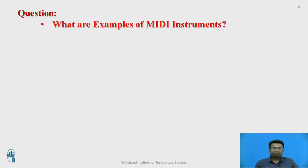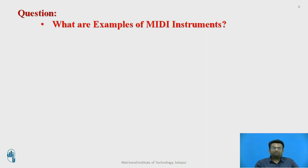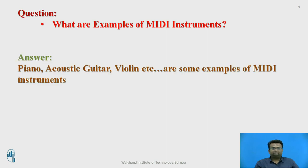Let me ask you one question: what are the examples of MIDI instruments? You can pause this video, think about this question, and write down your answer in the notebook. After writing the answer, you can resume the video to see the answer. The answer is: piano, acoustic guitar, and violin are some examples of MIDI instruments.